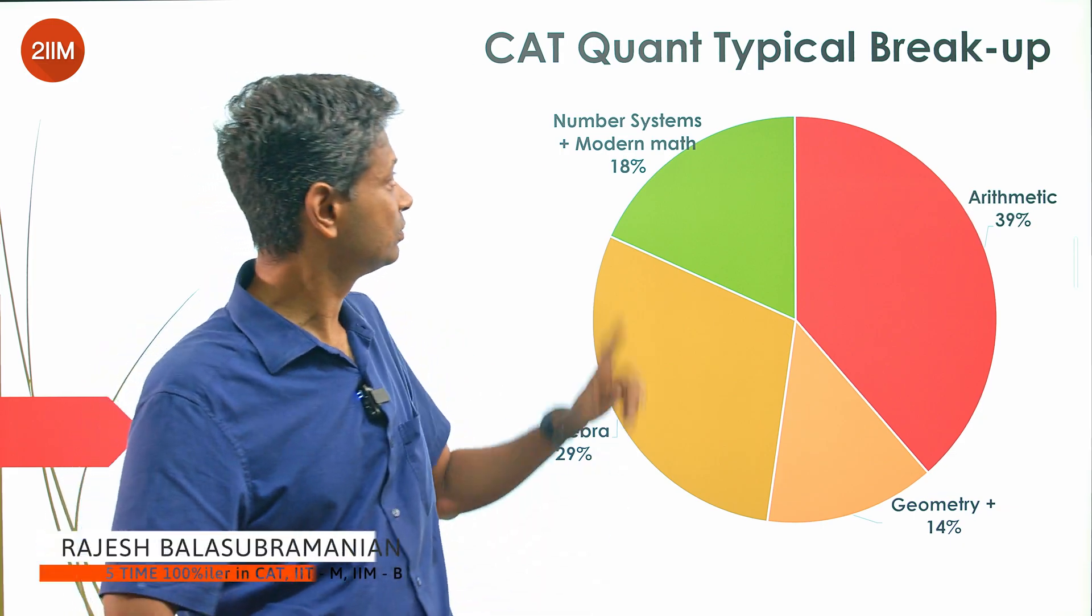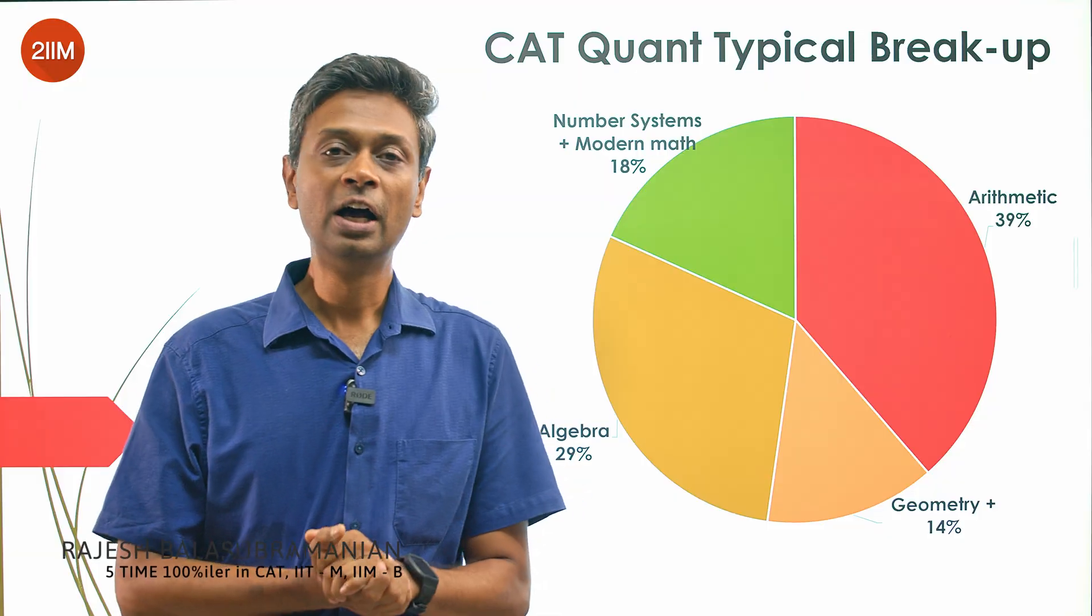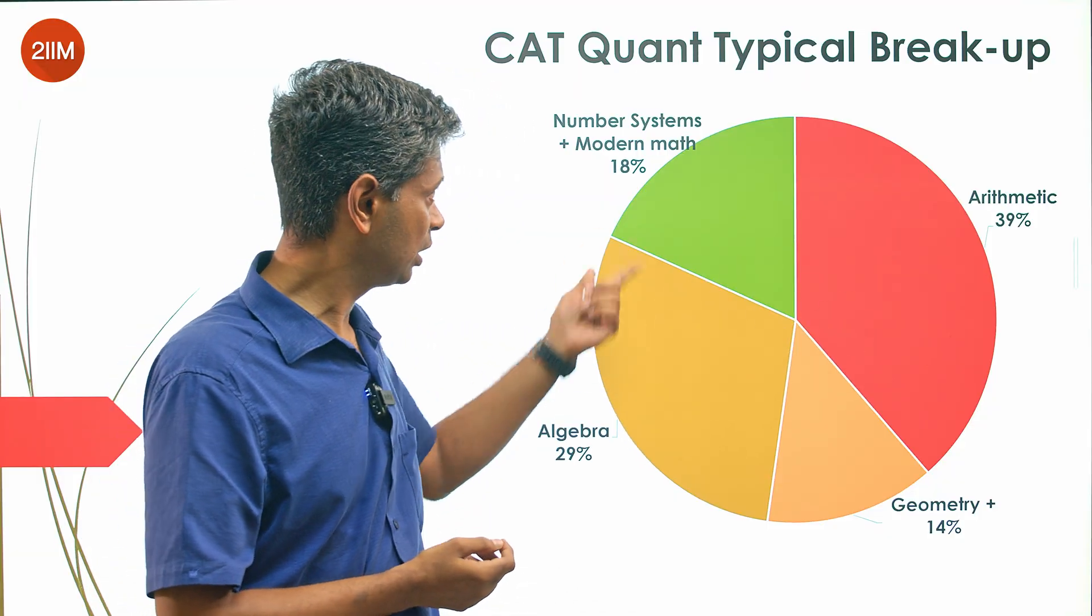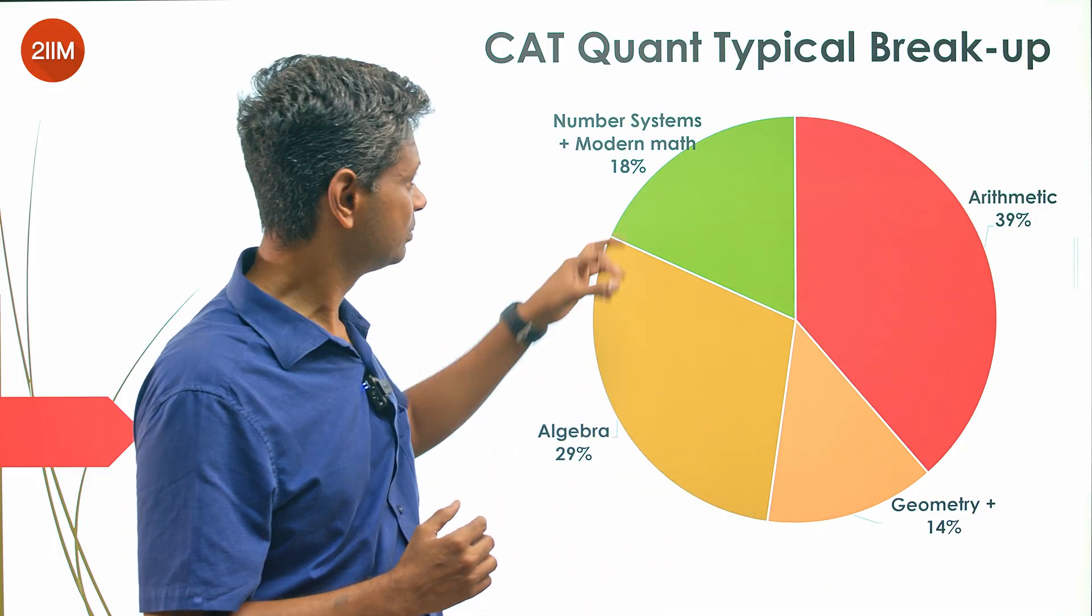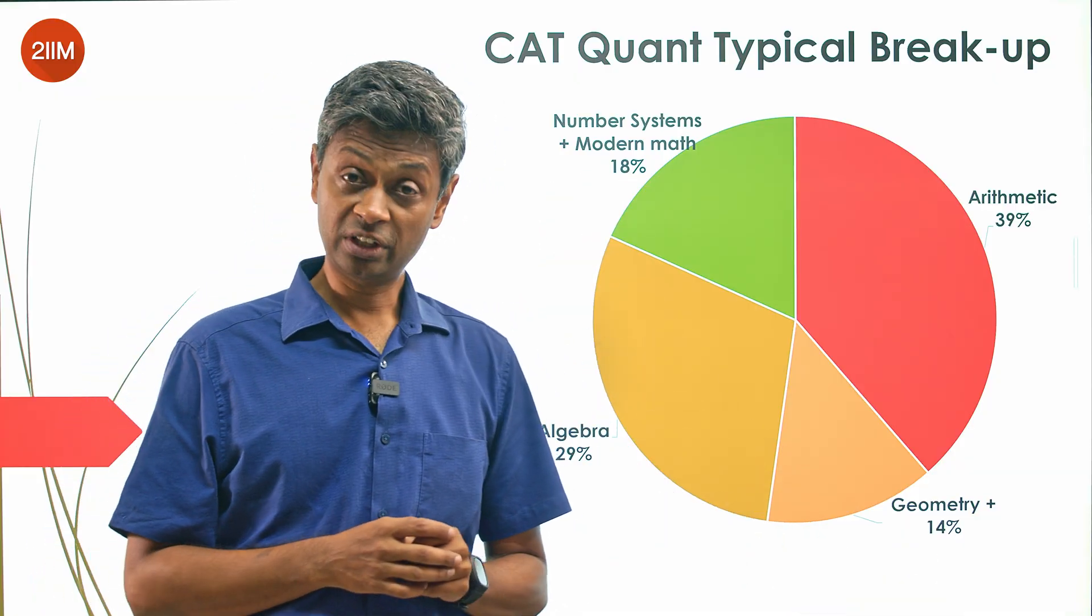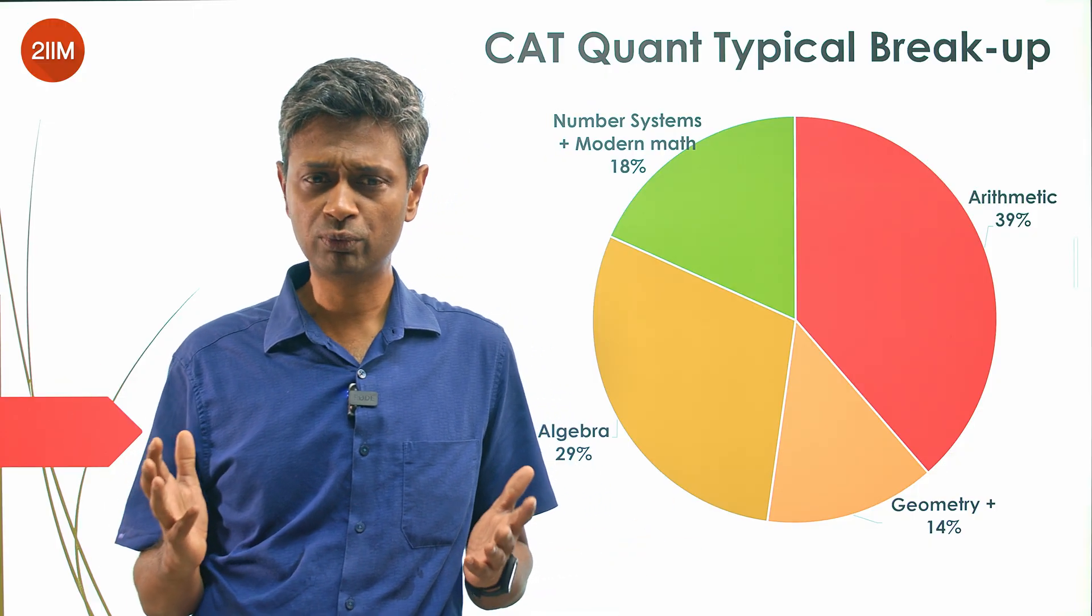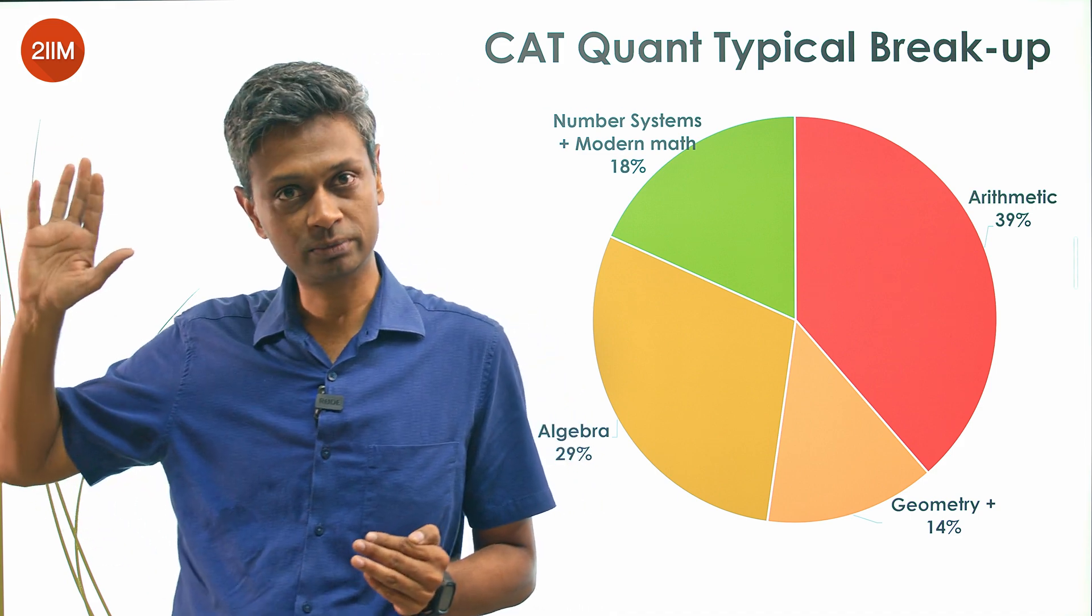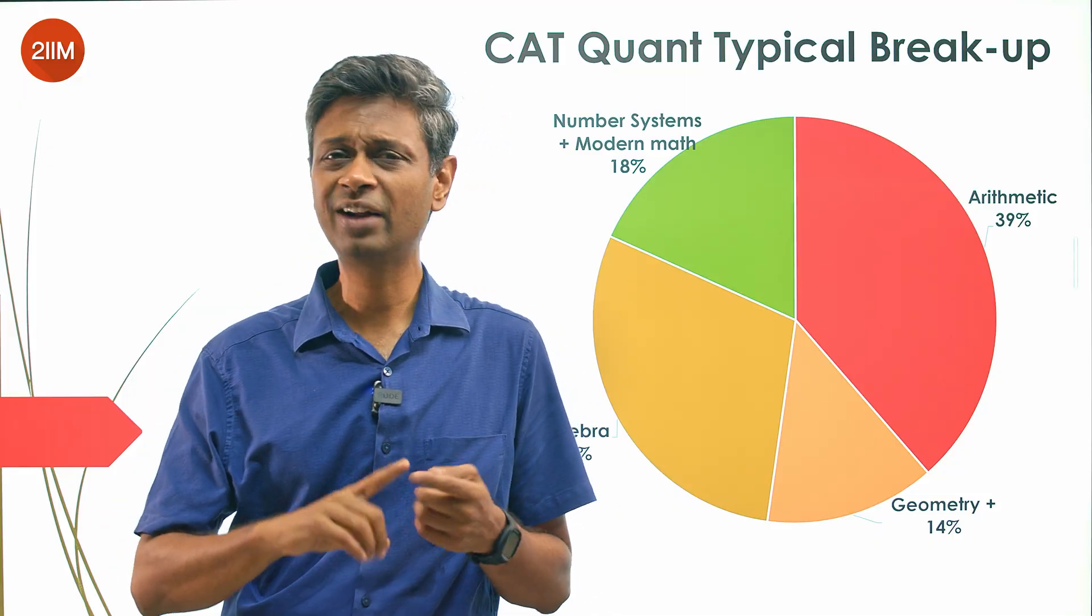Hello folks, we're going to talk about number systems and specifically how to prepare for it. Before that, some context: CAT has arithmetic, algebra, number systems, and geometry. Biggest weightages to arithmetic, then algebra, then number systems, then geometry. Having said that, number systems is vast. People have written giant books on it, so we need to know what to focus on and more importantly what not to focus on. In number systems, I'm including permutation, combination, probability, and set theory.